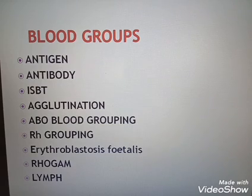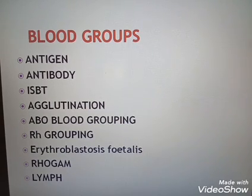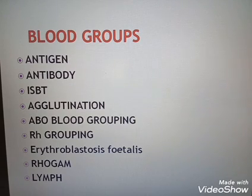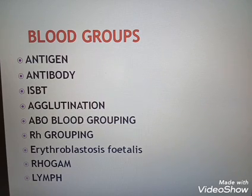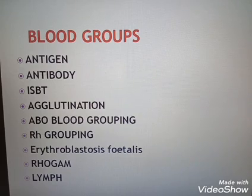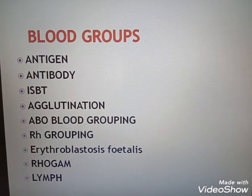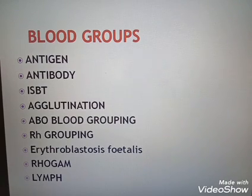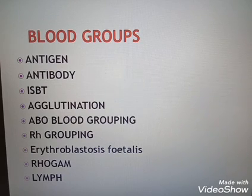During the delivery of the first child, there is a possibility of exposure of the mother's blood to a small amount of RH positive blood from the fetus. In such cases, the mother starts producing antibodies against the RH antigen in her blood.